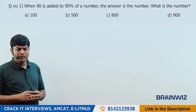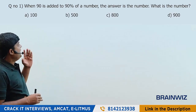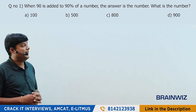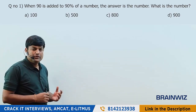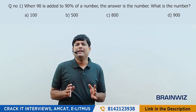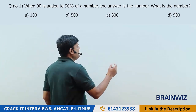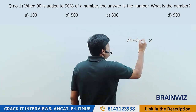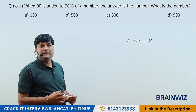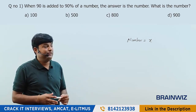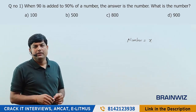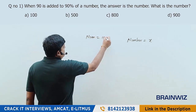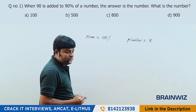The first question on the board: if 90 is added to 90% of a number, we get the number back. What is the number? Now, most people write 'let the number be x,' but instead of using x, let the number be 100%. The topic itself says 'percent,' so let's assume the number is 100%.